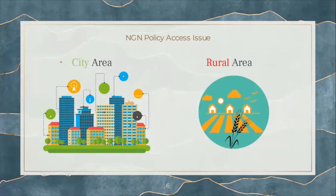Next is the NGN policy access issue. In the city area, or in populated areas, there are 5G and 4G available. But in rural areas, there are only 3G and 4G. Since NGN uses 5G, rural areas will find it hard to access NGN.